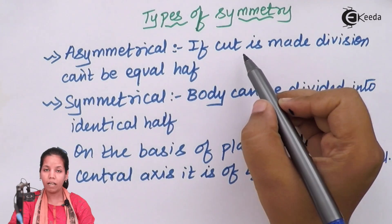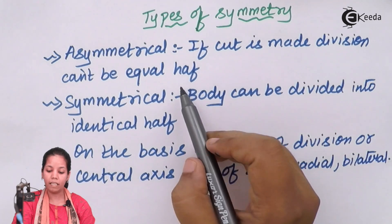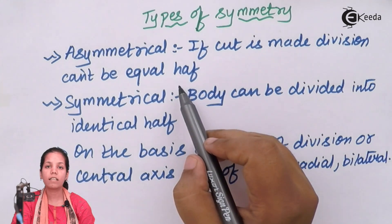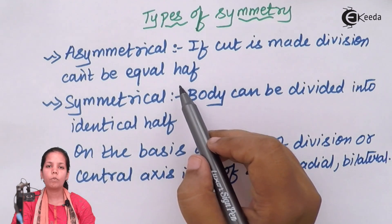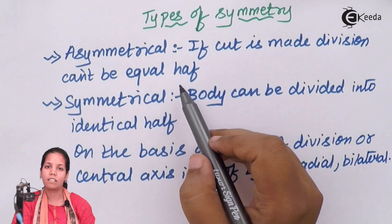For example, if you make a cut inside an organism's body and the division cannot be in equal halves, that's called asymmetry. For example, in sponges, if you make a cut the body cannot be divided into two equal halves.